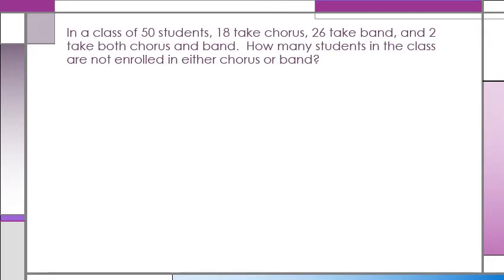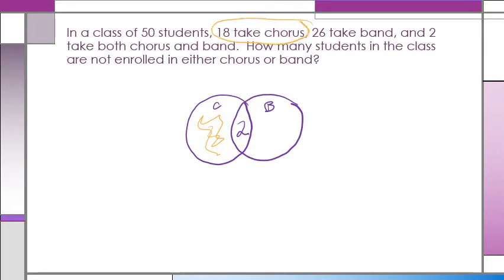In a class of 50 students, 18 take chorus, 26 take band, 2 take both chorus and band. How many students in the class are not enrolled in either chorus or band? I can use a Venn diagram to solve that. If this is my chorus and this is my band, I'm going to start with whoever takes both. So if 2 people take both band and chorus, I'm going to put them in here. In this section here is people that only take chorus. We know that 18 total take chorus, so 18 minus 2 are going to take chorus only, and that goes in here. 16 students take chorus only.